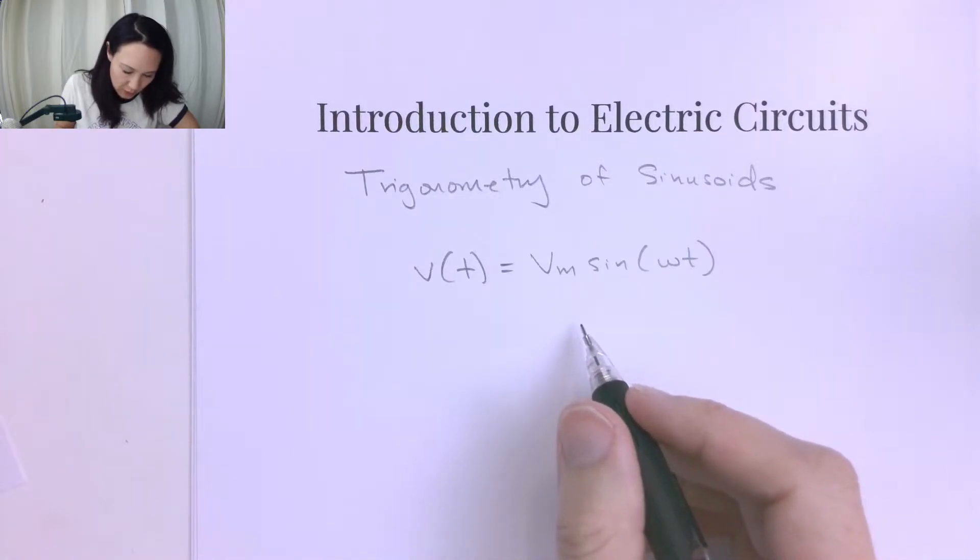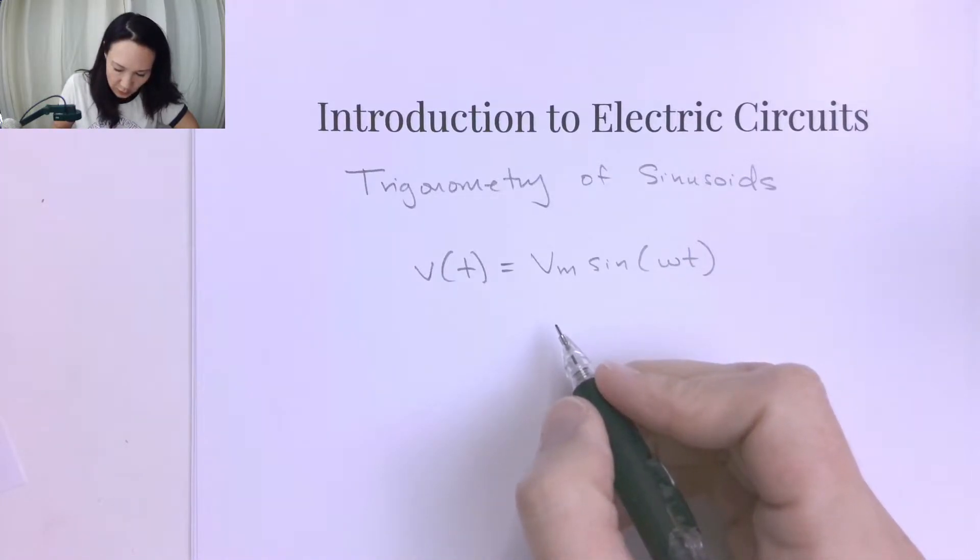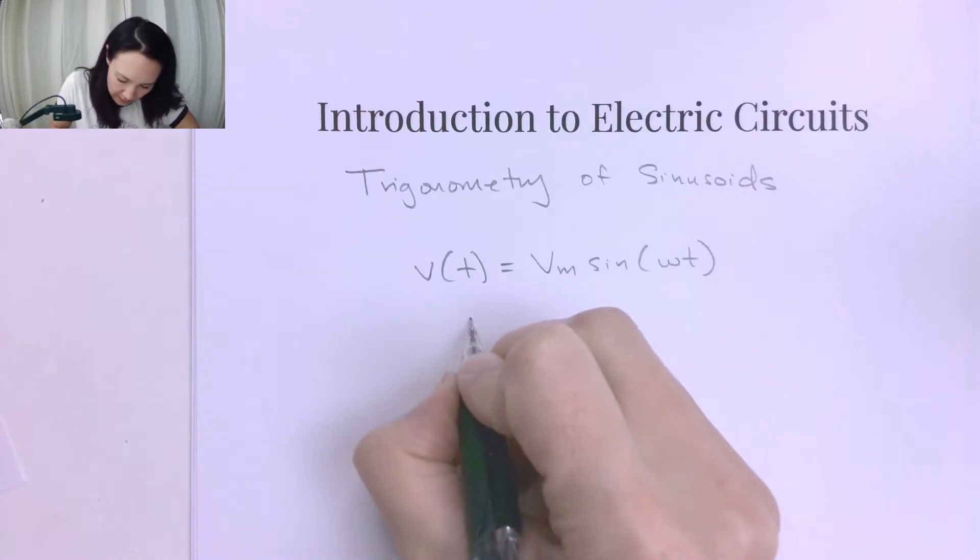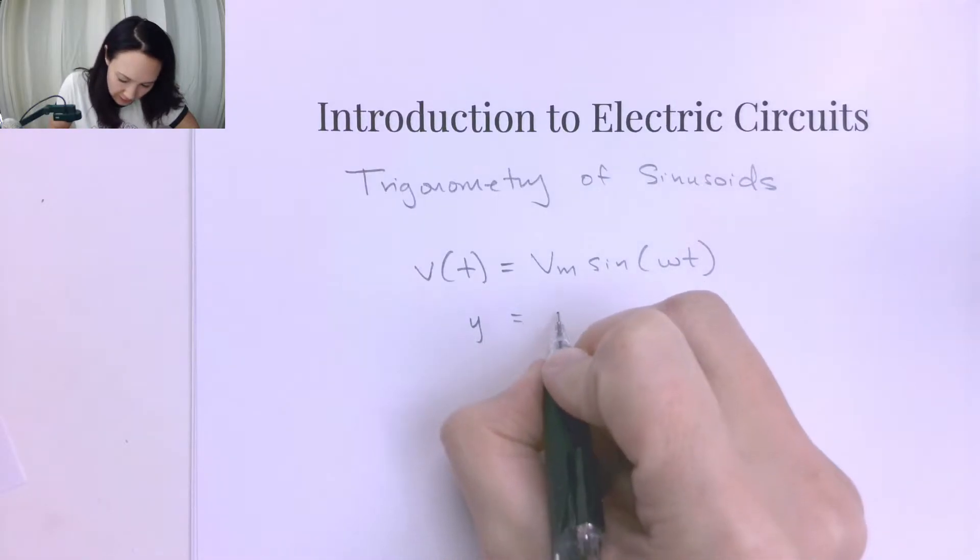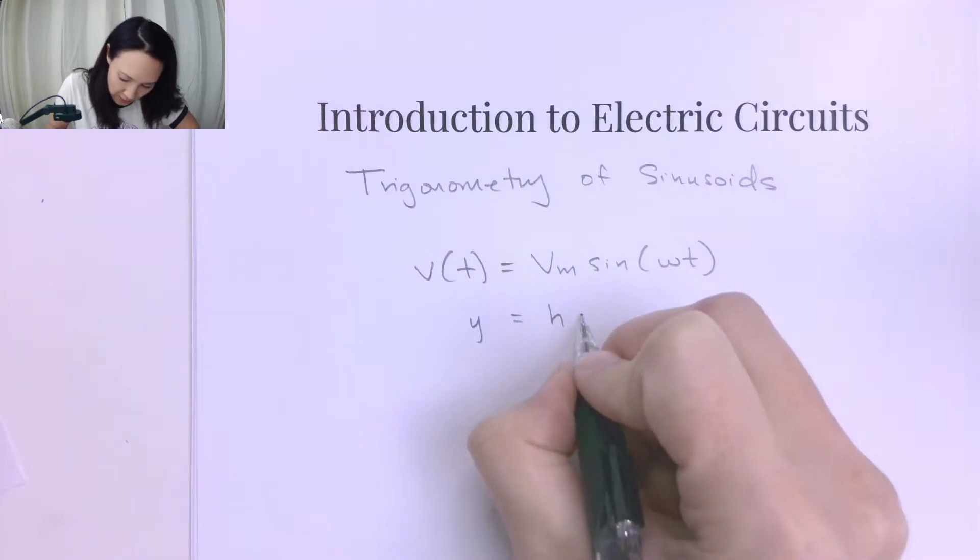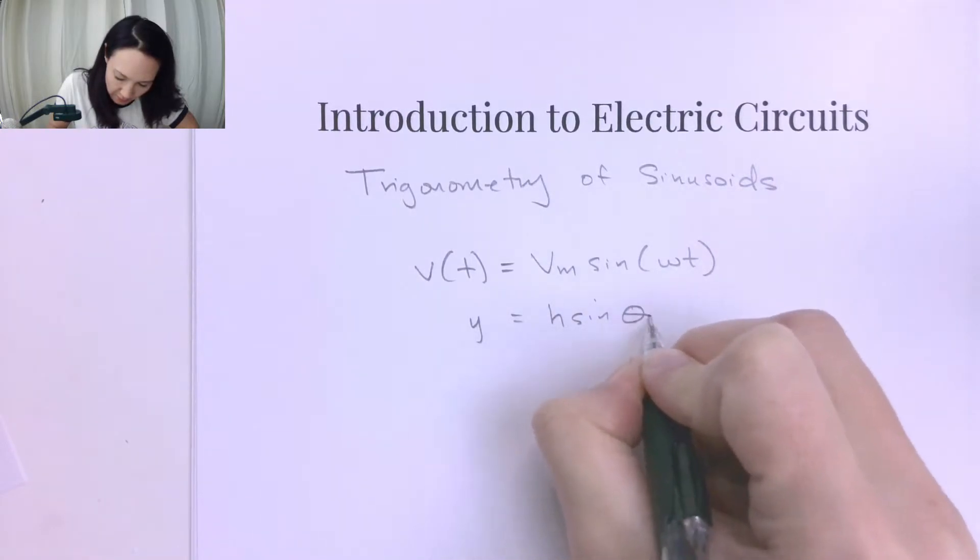this might look familiar to you when you study trigonometry. This is function notation, so V in terms of t is basically a Y value, and this is some maximum, so we'll call it H times the sine of some argument.